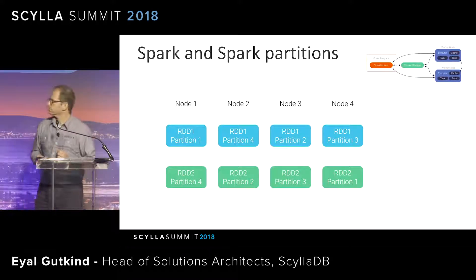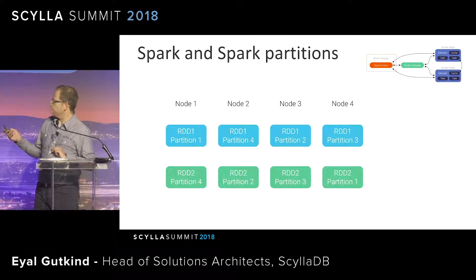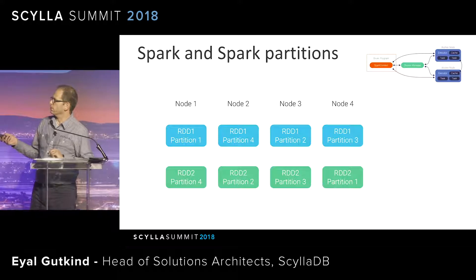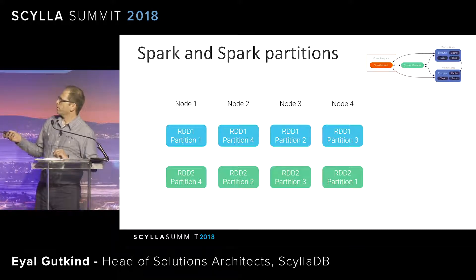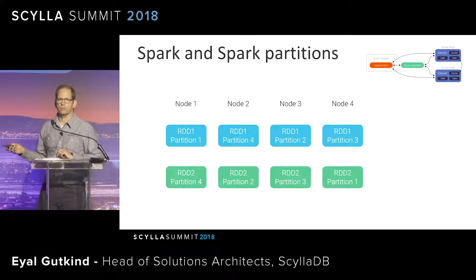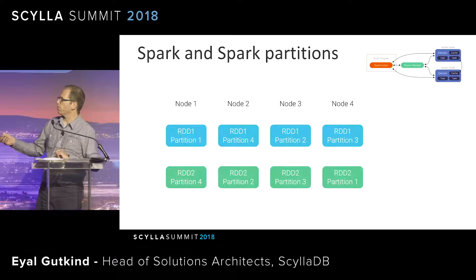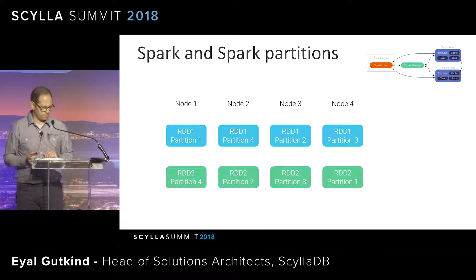So how does it look? Let's say this is my Spark cluster, and it has RDDs. It's going to try to read from the partition information into the different RDDs. Remember, the RDDs are also distributed across different nodes. So I'm going to have multiple partitions from Scylla written into multiple nodes of Spark — the executors themselves.